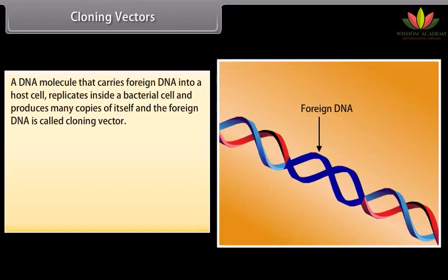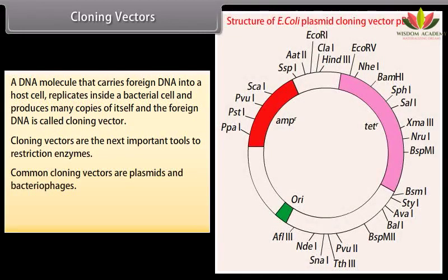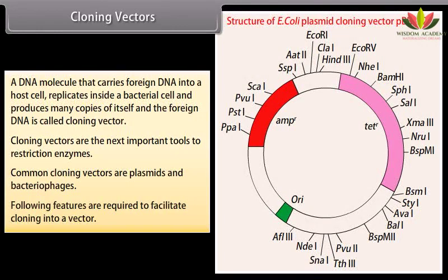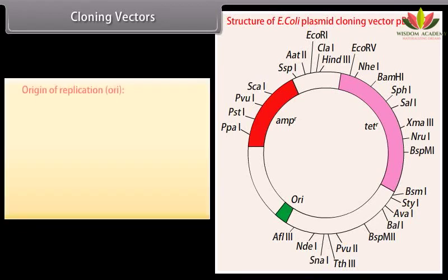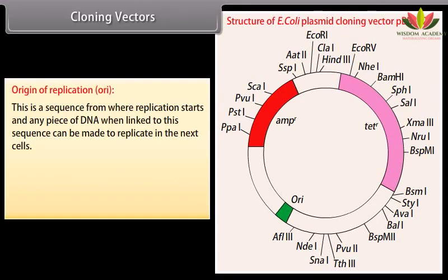A DNA molecule that carries foreign DNA into a host cell, replicates inside a bacterial cell, and produces many copies of itself and the foreign DNA is called a cloning vector. Cloning vectors are the next important tools after restriction enzymes. Common cloning vectors are plasmids and bacteriophages. Following features are required to facilitate cloning into a vector. Origin of replication: this is a sequence from where replication starts, and any piece of DNA when linked to this sequence can be made to replicate in the host cells.